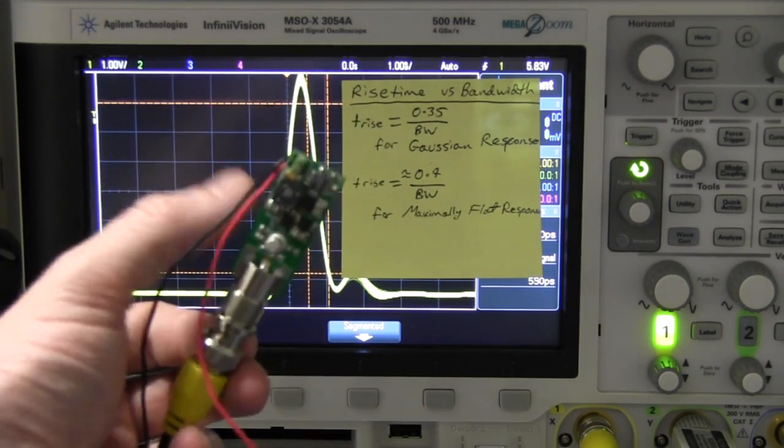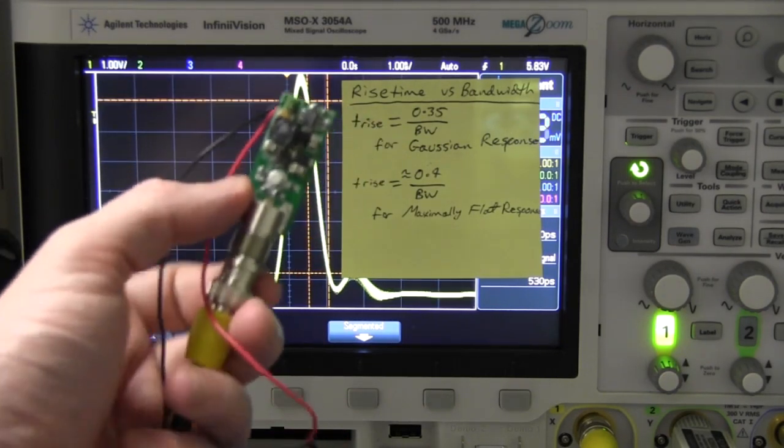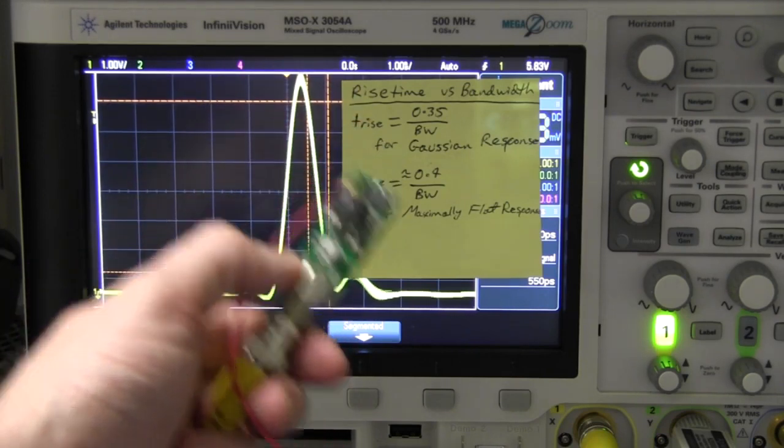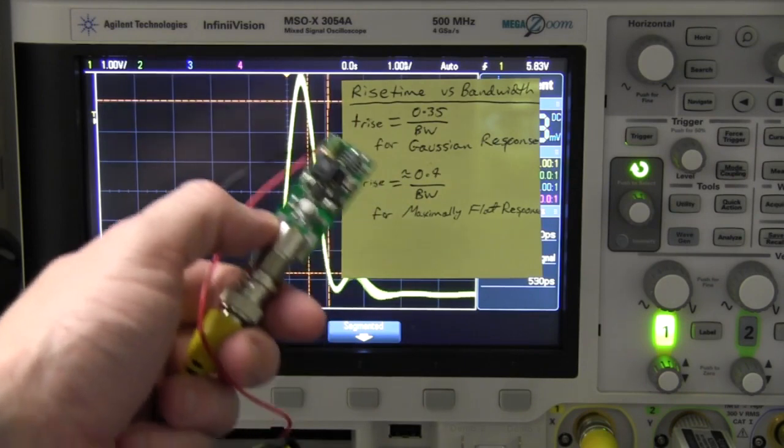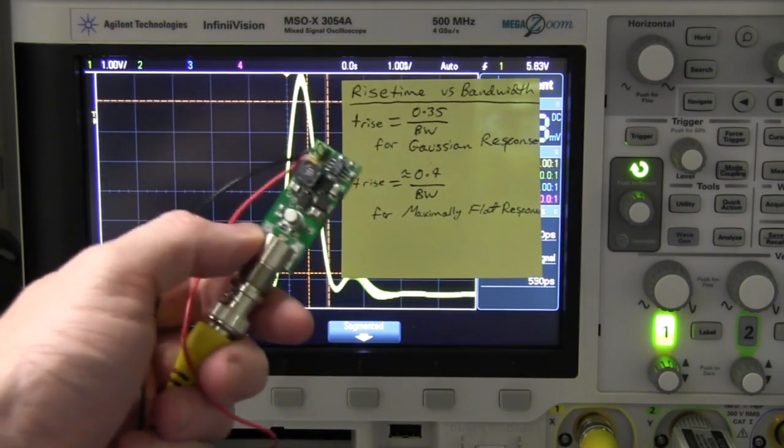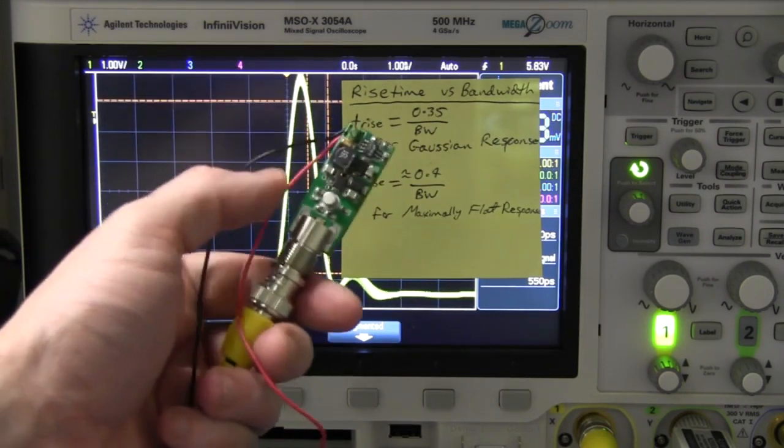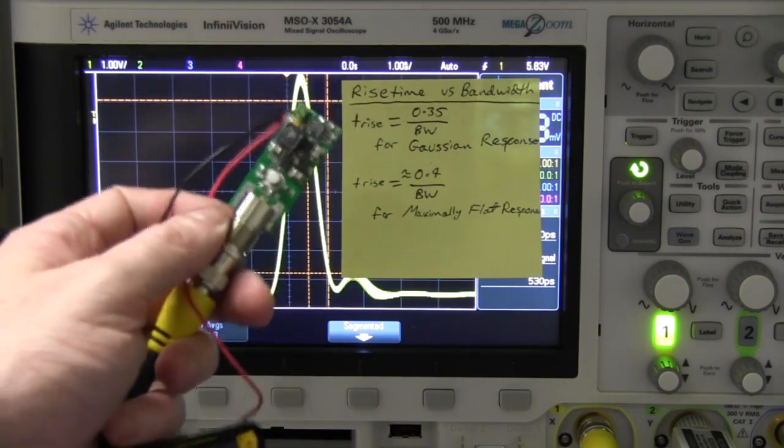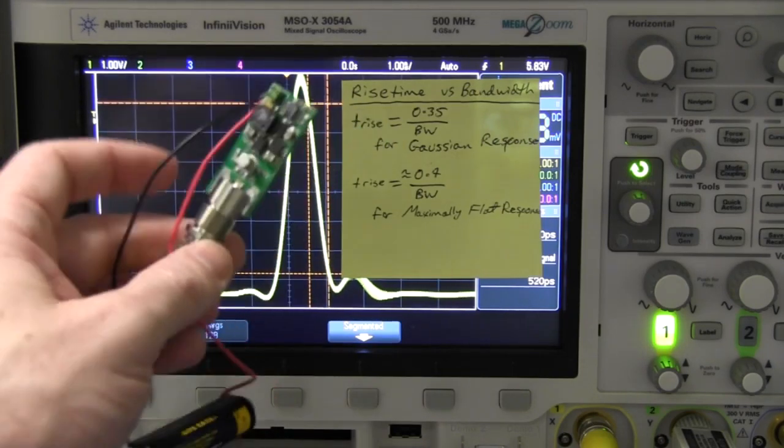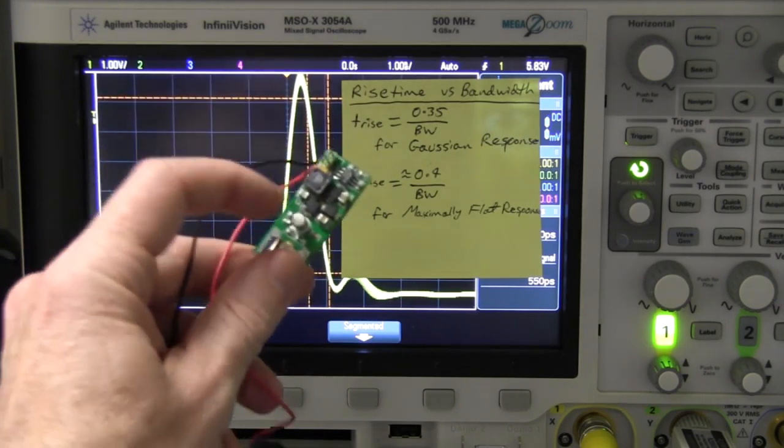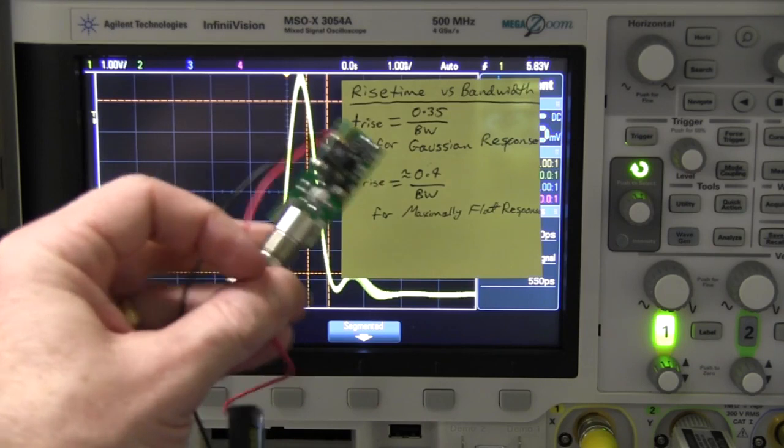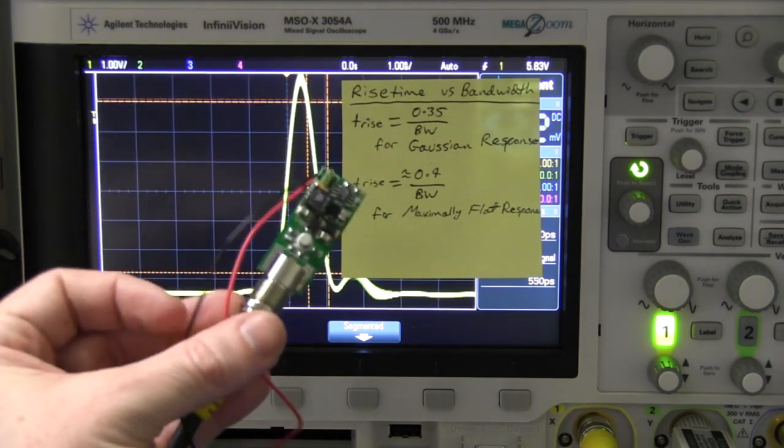And of course, to measure the true performance of this thing, we need a really high-end sampling scope, the type that you mortgage your house for, a $50,000, $100,000 scope, something like that, that has 10 gigahertz, 20 gigahertz bandwidth. We need something really good so that the bandwidth of the oscilloscope is basically so high it doesn't matter, we're measuring the true performance of the rise and fall time of this thing.